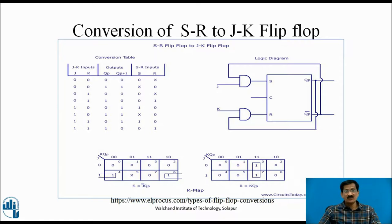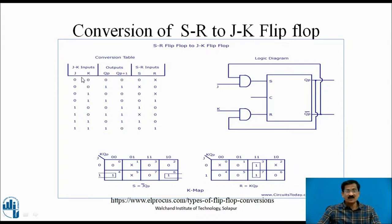This is the conversion table for SR to JK flip-flop, which makes use of both the excitation table and the truth table. On the left-hand side is the JK flip-flop table (the required flip-flop), and on the right-hand side is the SR flip-flop excitation table (the actual flip-flop being used). The required JK inputs and corresponding SR inputs are mapped for each present and next state combination.